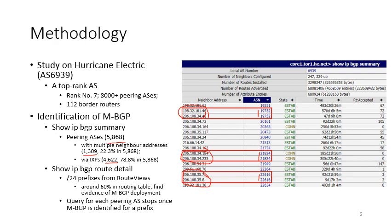In the next step, we focus on peering ASs that are connected to Hurricane Electric via multiple neighbor addresses and via IXPs. In step 2, we use 'show ip bgp route detail' to query the first IP address in each /24 prefix obtained from route views for each peering AS. We use /24 prefixes because they account for around 60% of the BGP routing table. The aim is to find evidence of MBGP deployment, so we don't consider all prefixes. Note that our query to each peering stops once MBGP is identified for a prefix, meaning not all prefixes are queried.